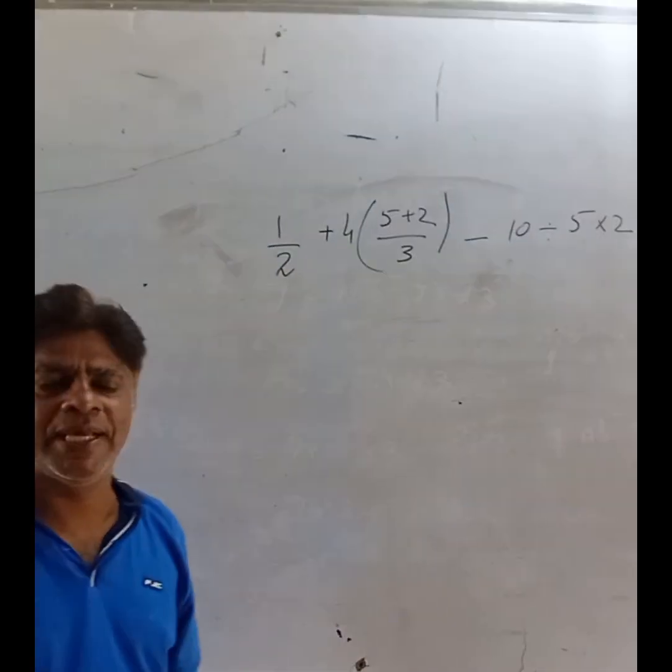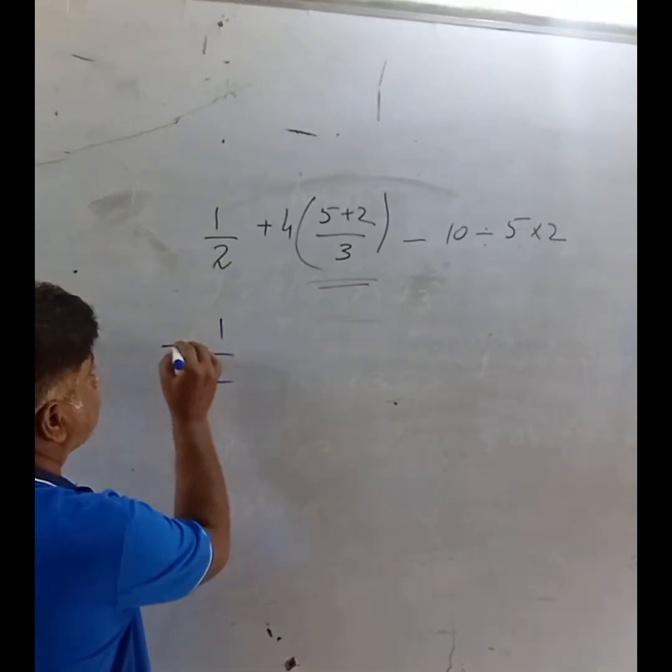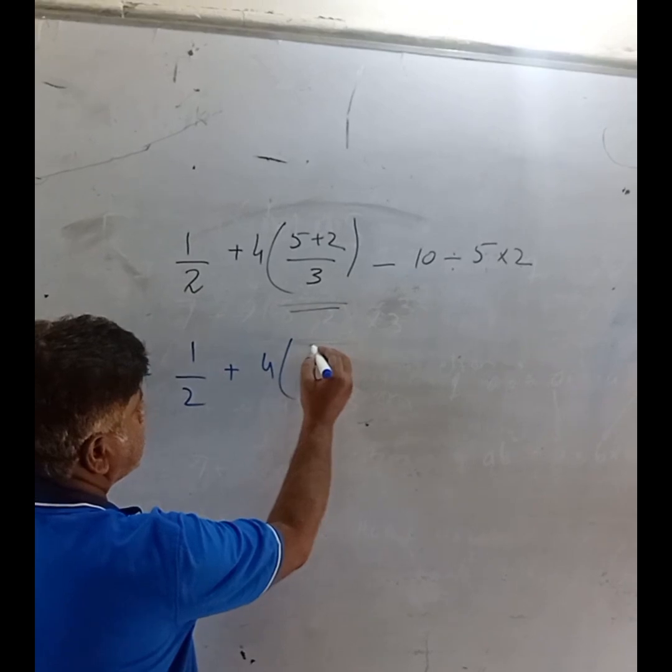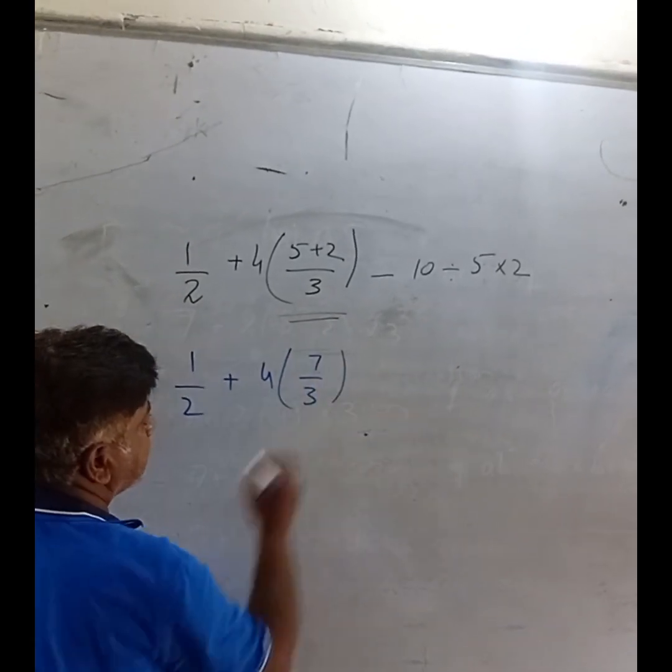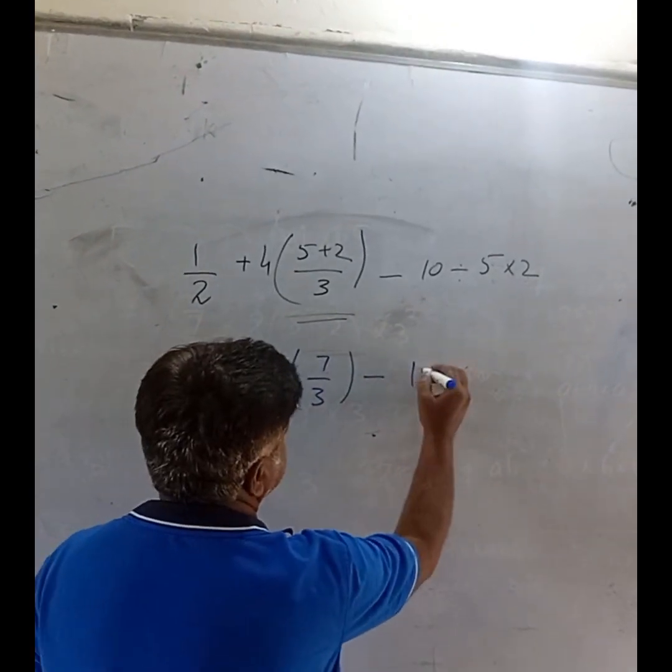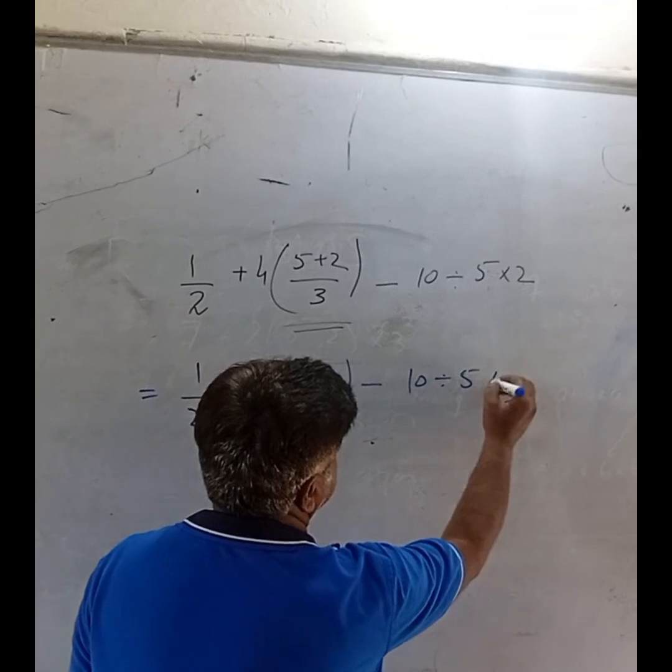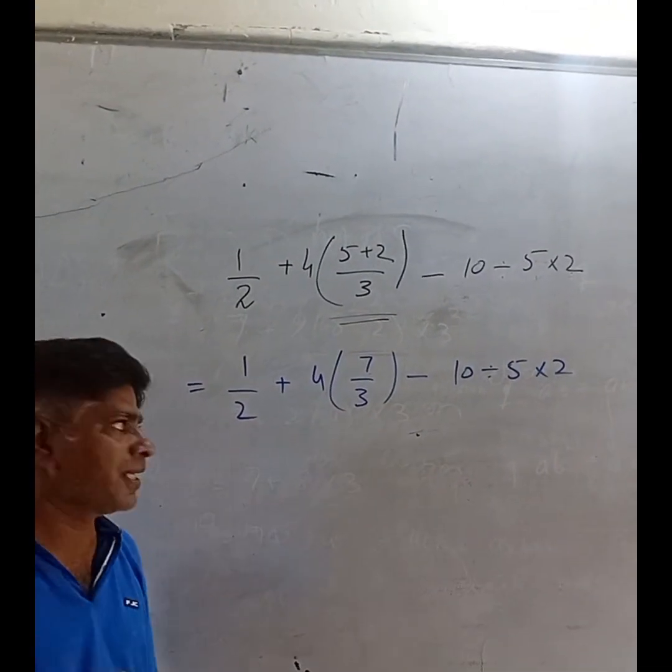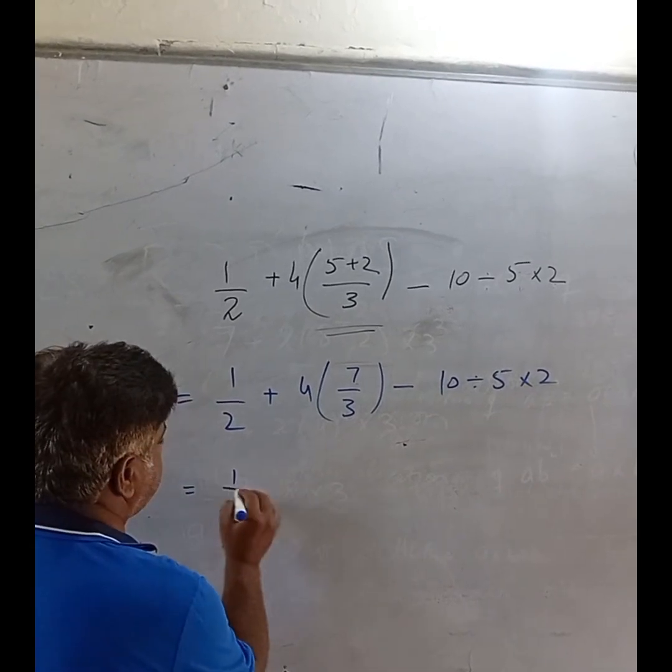We will apply the BODMAS rule. 1/2 plus... here we will solve the brackets: 5 plus 2 equals 7, divided by 3, right? And then minus 10 divided by 5 times 2. We can solve this BODMAS rule similarly, but the key is there to understand.